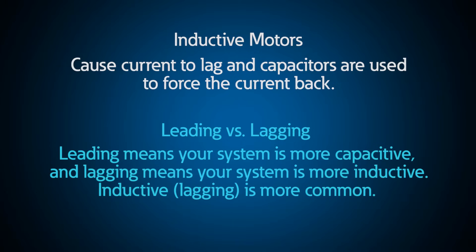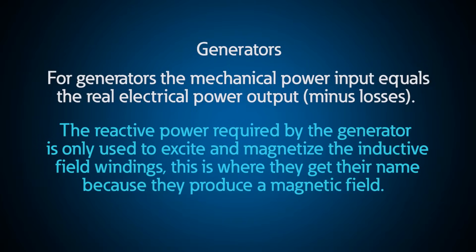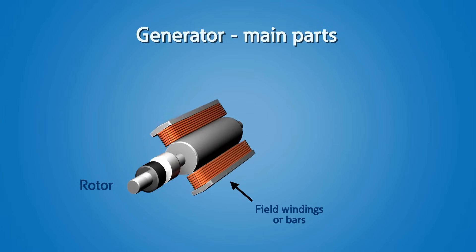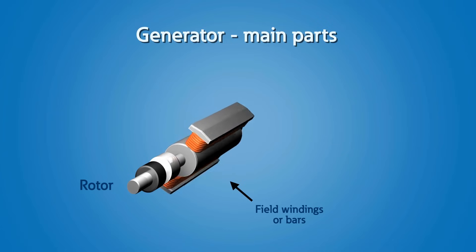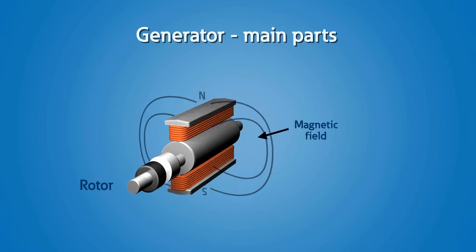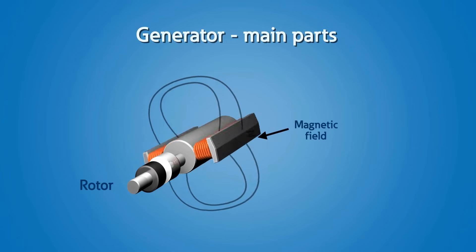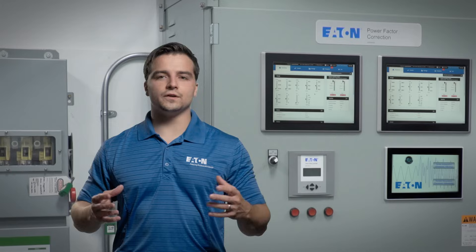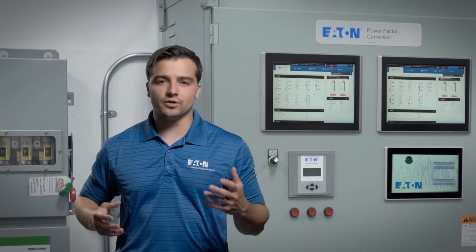Leading means your system is more capacitive, and lagging means your system is more inductive, which is more common. For generators, the mechanical power input equals the real electrical power output. The reactive power required by the generator is only used to excite and magnetize the inductive field windings — this is where they get their name because they produce a magnetic field. The resultant magnetic field isn't doing any real work.